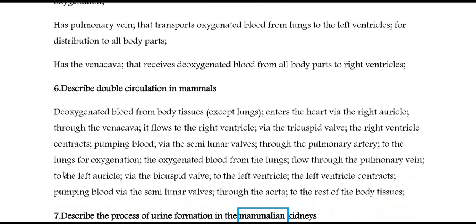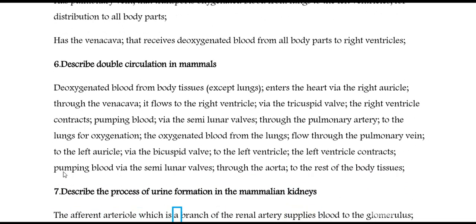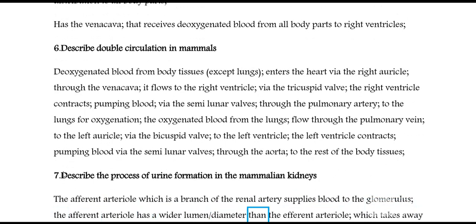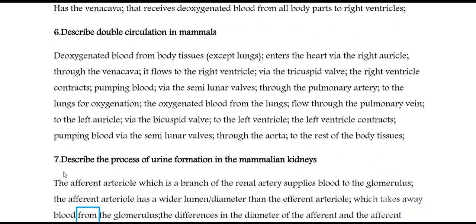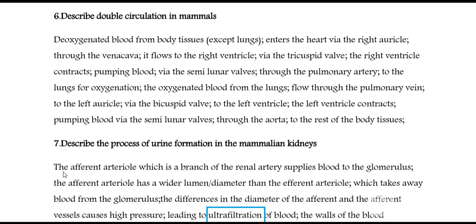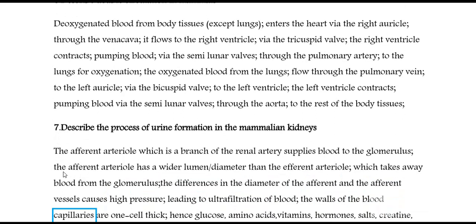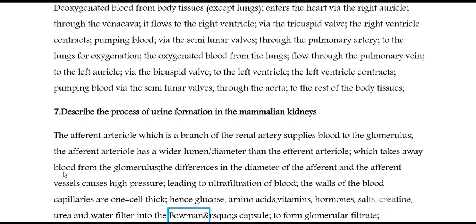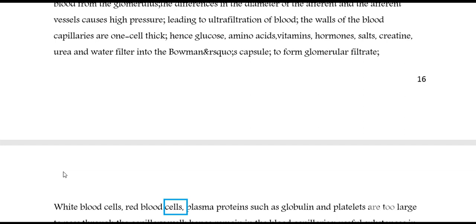Question 7: Describe the process of urine formation in the mammalian kidneys. The afferent arteriole, which is a branch of the renal artery, supplies blood to the glomerulus. The afferent arteriole has a wider lumen or diameter than the efferent arteriole, which takes away blood from the glomerulus. The difference in diameter causes high pressure, leading to ultrafiltration of blood. The walls of the blood capillaries are one cell thick; hence glucose, amino acids, vitamins, hormones, salts, creatine, urea, and water filter into the Bowman's capsule to form glomerular filtrate. White blood cells, red blood cells, plasma proteins such as globulin, and platelets are too large to pass through the capillary wall, hence remain in the blood capillaries.